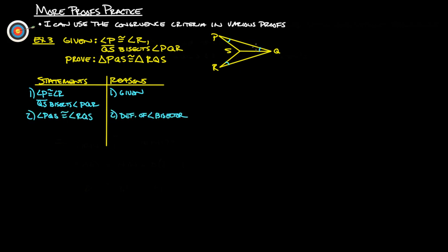First, let's put in our given statements. Since QS bisects angle PQR, we know that angle PQS is congruent to angle RQS by the definition of an angle bisector. We also know that SQ is congruent to itself by the reflexive property. So we have two angles and a side. The side does not connect the two angles, so it's angle, angle, side.